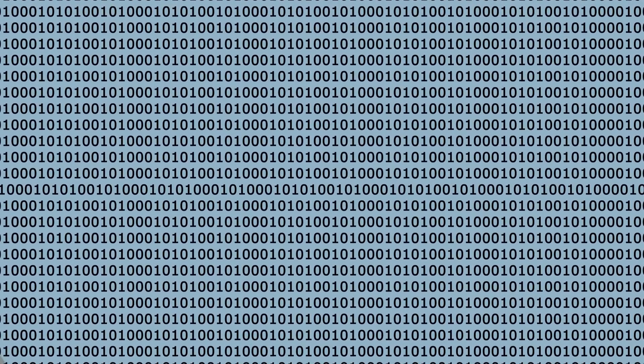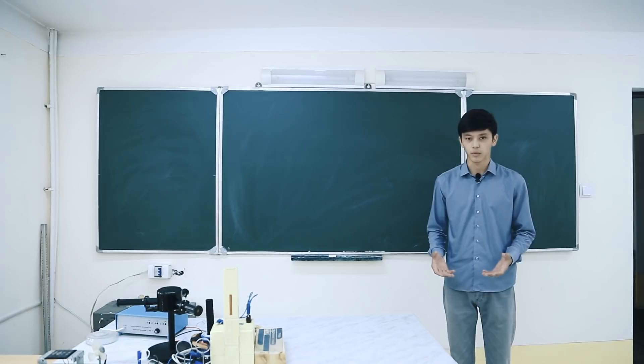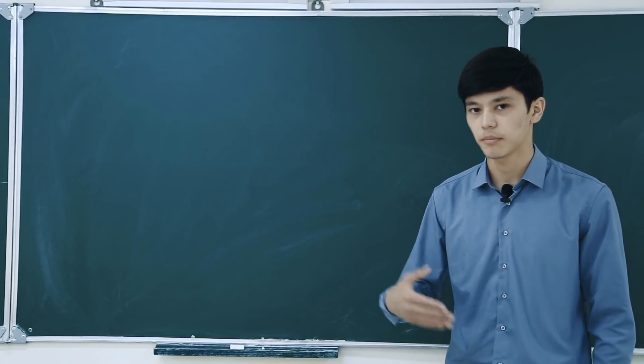While classical computers use binary codes which are ones and zeros, quantum computers use qubits that are ones and zeros at the same time due to superposition and entanglement. All these properties make up the quantum computers, and I hope it's gonna be this generation who's gonna develop it further. Let's see you later.